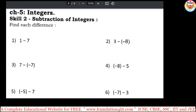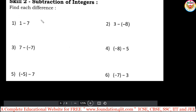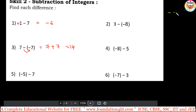Subtraction is nothing but addition. For example, minus 1 minus 7 is the same as plus 1 minus 7, which gives minus 6. Do subtraction: 7 is the greater number, so keep its sign — minus 6. Now, when signs are side by side, like minus minus 7, minus into minus gives plus, so it becomes plus 7.